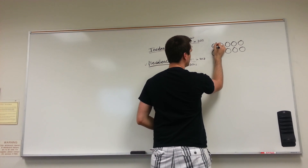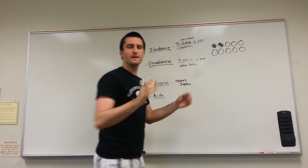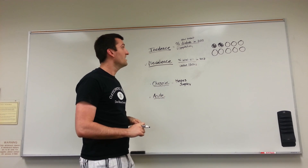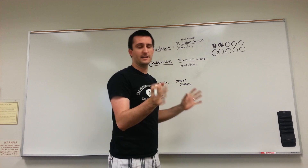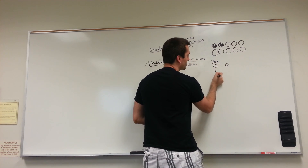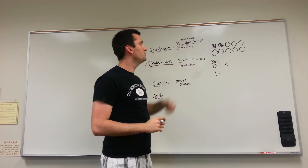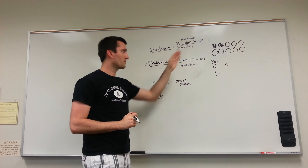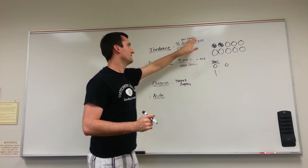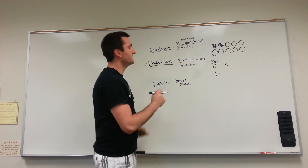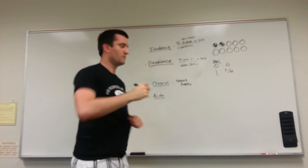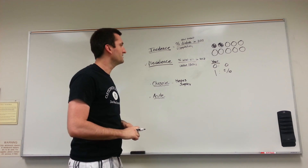Now let's give two people herpes simplex virus. At year zero there were zero cases. In year one, we have two new cases. What was the incidence of herpes in this population in year one? It was two new onset cases divided by the total population of 10, so the incidence was 2 out of 10, or 0.2.